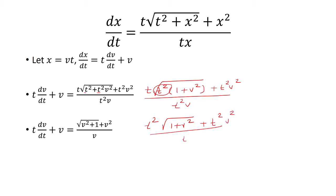And at this point, we see that there's actually three t squared, and those are going to get eliminated. And so we're going to be left with square root of v squared plus 1 plus v squared over v.